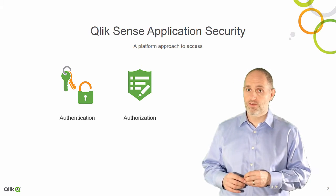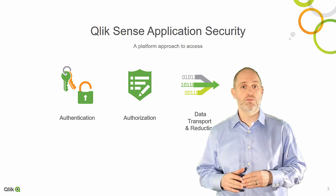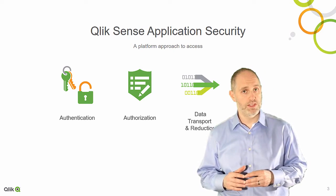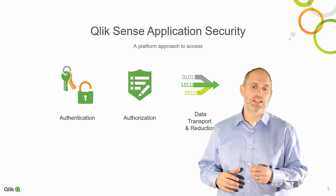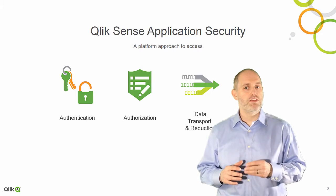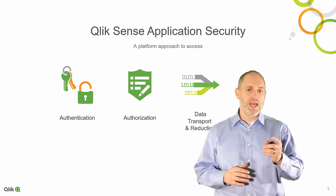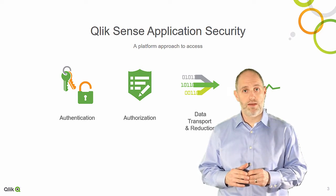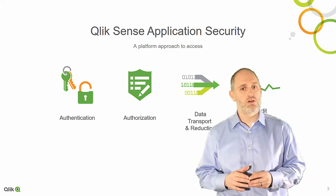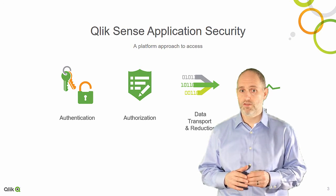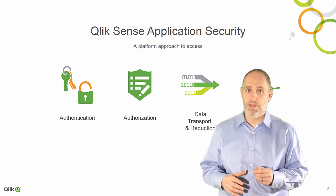When a user enters an application, their credentials are checked against the data model to determine row and column level data access. Based on the access granted, data in the application is reduced and the user sees only what they are allowed to see. To manage and administer the application security platform, Qlik Sense provides license monitoring and access control auditing in the Qlik Management Console, enabling Qlik administrators to govern user access to the platform.